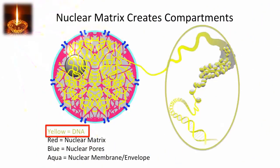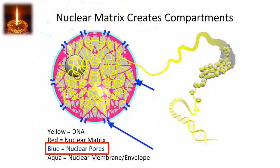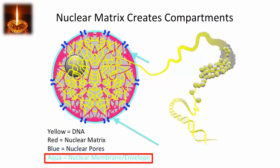These compartments within the nucleus are created by proteins. The DNA is shown in yellow. In red is the nuclear matrix, comprised of a protein called lamin, which forms a crisscross structure that holds the nuclear structure in place. In blue are the nuclear pores that allow things to move in and out of the nucleus. And in aqua is the nuclear membrane — the envelope comprised of a phospholipid bilayer that surrounds the nucleus. These compartments are really important in terms of gene expression.